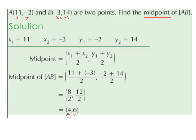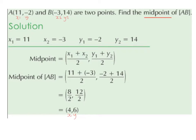So we have an x-value of 4 and a y-value of 6. This is the final answer — this is the midpoint. We want a point as our answer, so we want an x-value and a y-value. We do not add these numbers together.